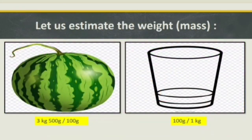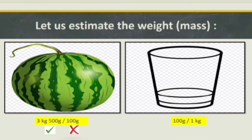Let us estimate the weight of a watermelon first. Is it 3 kilograms 500 grams, or 100 grams? Yes, it is 3 kilograms 500 grams — 100 grams is the wrong option. Now, see the weight mentioned below the glass tumbler. Is it 100 grams or 1 kilogram? 100 grams is the right answer.